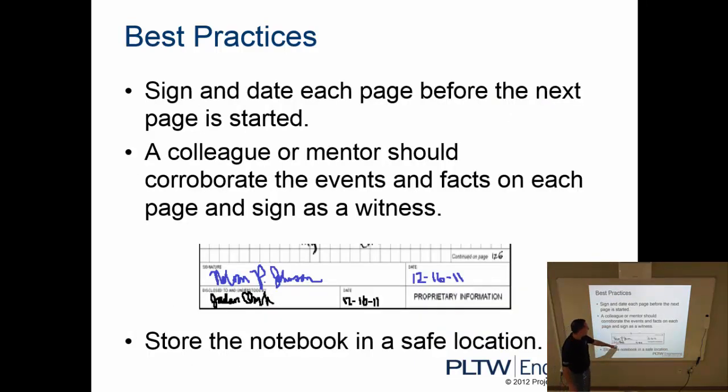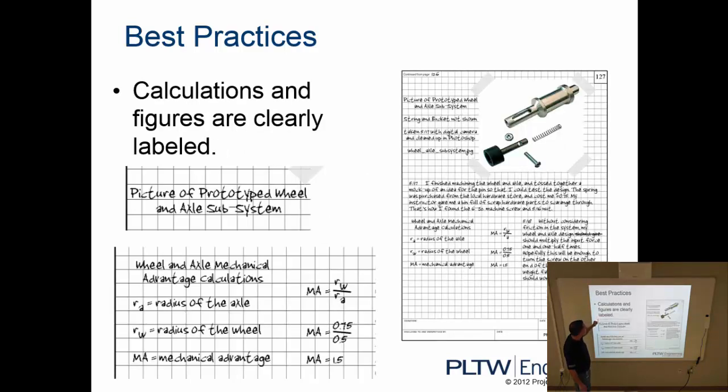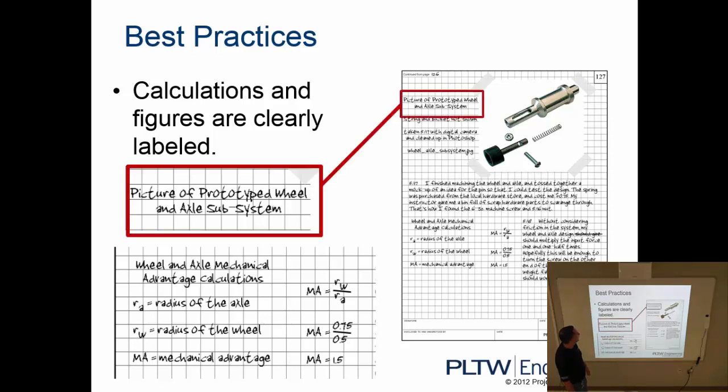Sign and date each page at the bottom before going on to the next page. And again, if you're working with somebody on the project, you're going to have them witness signature that because you worked on it together. Store the notebook in a safe location. For us, there's a shelf specifically for second period that you can put your notebook in and store it there. Make sure that all sketches are labeled. Make sure that the calculations and figures are clearly labeled. This would be the picture of a prototype wheel and axle subsystem along with the calculations. I'm showing these as the type of calculation I used to show the work for those calculations.